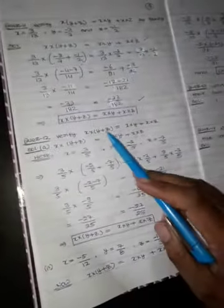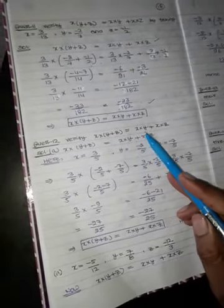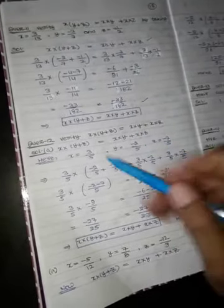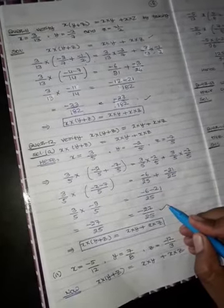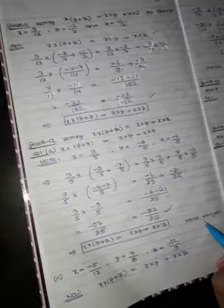Question number 12: x into (y plus z) equals x into y plus x into z. We have the values of x, y, and z. We put both values. Left-hand side equals right-hand side. So this is verified.